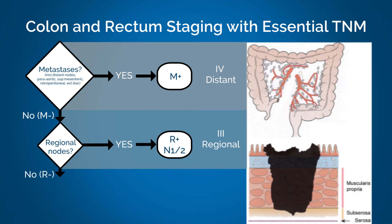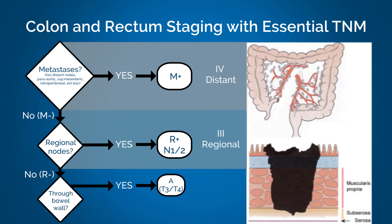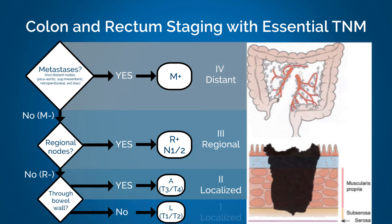If no nodes are involved, we then see if the cancer has moved through the bowel wall. If yes, the patient would be classified as stage two. If the cancer has not moved through the bowel wall, the patient is classified as stage one.